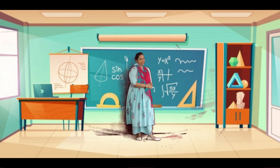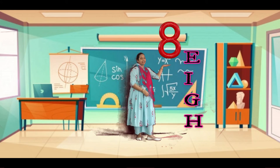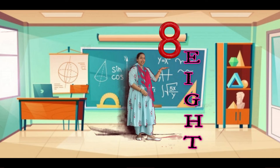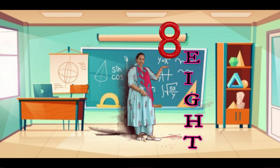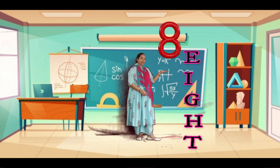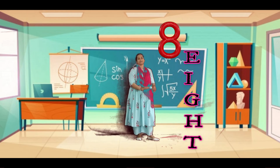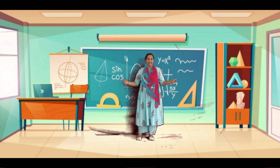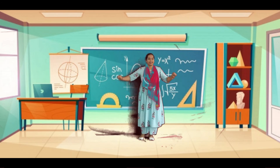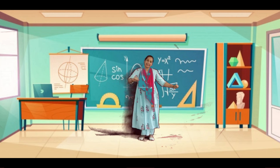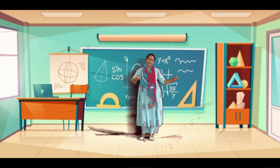Now see here children, number 8. Spelling: E, I, G, H, T. Eight. So children, again let us learn the number, let us learn the number.